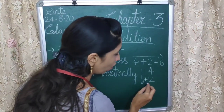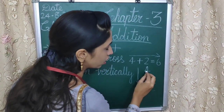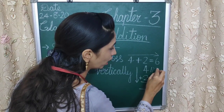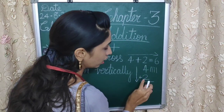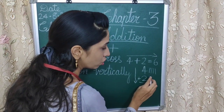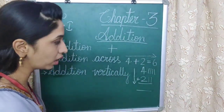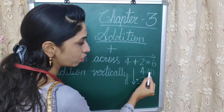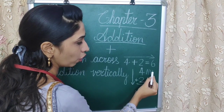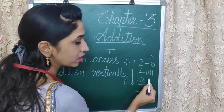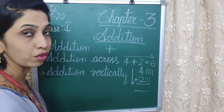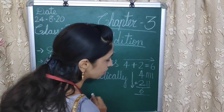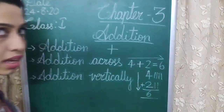Now we will count. Just draw 4 lines — that is one way you can add. Then the next number is 2, so draw 2 lines. Now count: 1, 2, 3, 4, 5, 6. We got 6. The sum is 6.